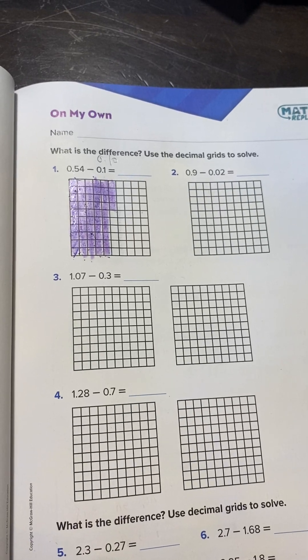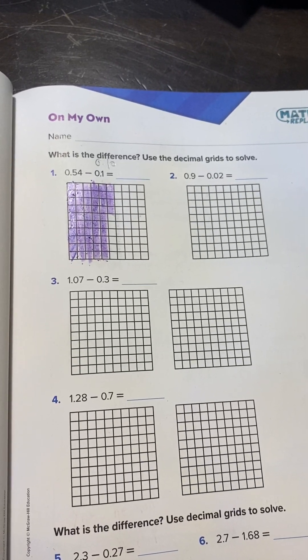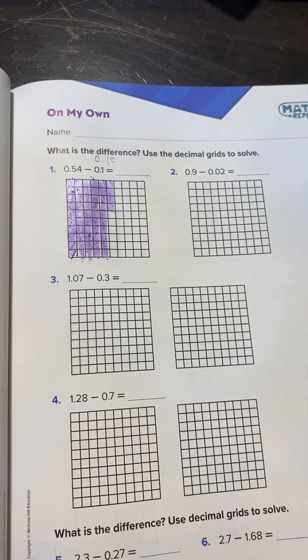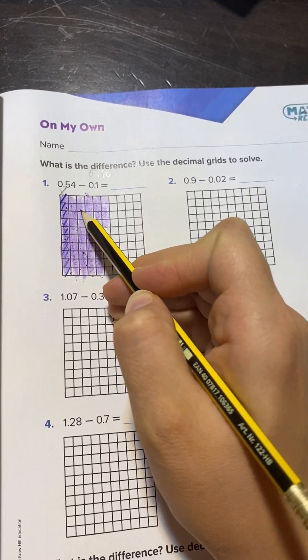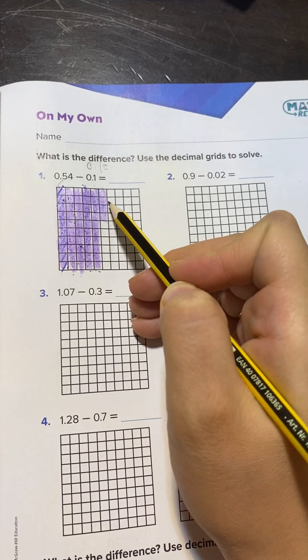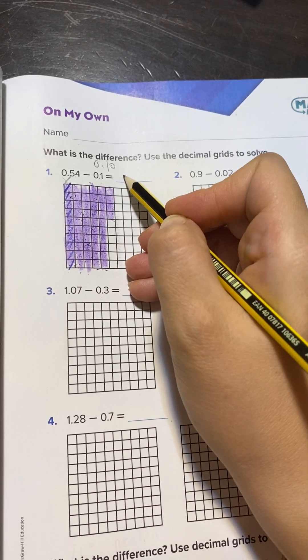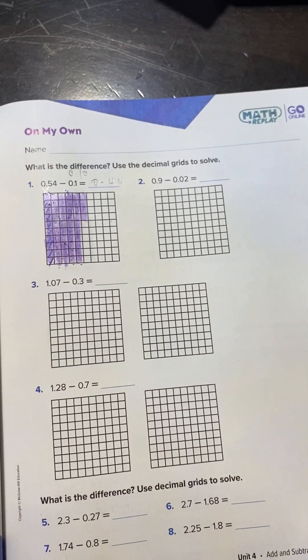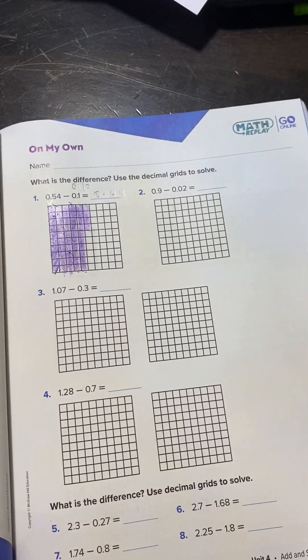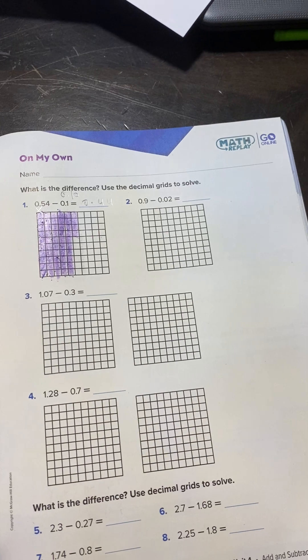Now how many left? You will count. This one is cancelled, so: 10, 20, 30, 40, 4. So how many left? 44 hundredths.